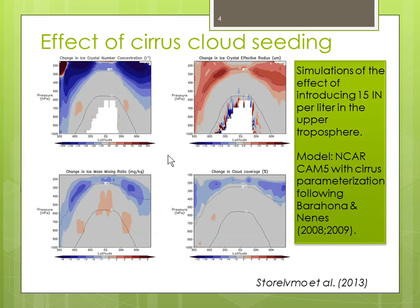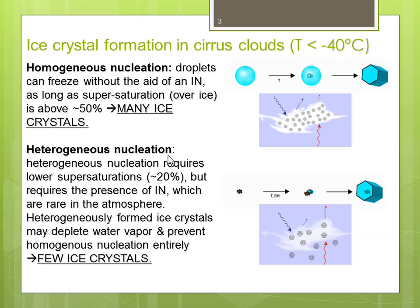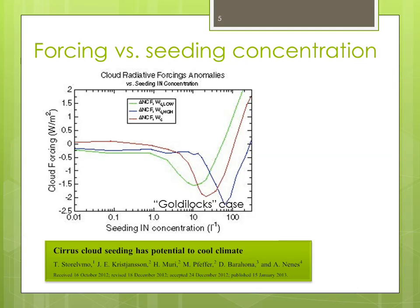The other two curves represent sensitivity simulations where we varied the treatment of upper tropospheric vertical velocities, or turbulence. You can see that exactly the right concentration of ice nuclei is very dependent on upper tropospheric dynamics — that's an important takeaway message. But another takeaway is that you could get a lot of cooling if you got the seeding ice nuclei concentration just right.